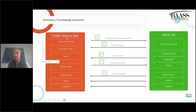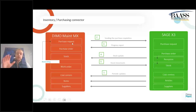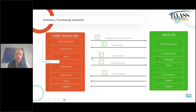The integration also covers purchasing and inventory. In Dimo MX, when I see I need more parts or need a specific part for a work order, I can raise a purchase request. That purchase request is sent to Sage X3, where it goes through your approval workflow — it can be transformed into a purchase order or rejected. As the maintenance person, you can follow up on the purchase request and purchase order directly within MX without going to Sage X3. Once the purchase order is confirmed and stock is received, it directly updates the stock within MX.